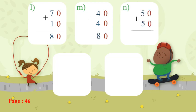Number: 50 plus 50. Ones plus ones, tens plus tens. Zero plus zero equals zero. Five plus five — it's very easy — equals ten. Then this will be one hundred.